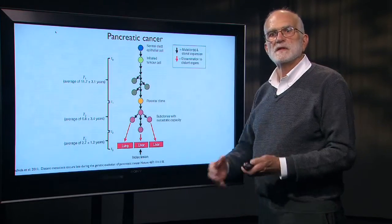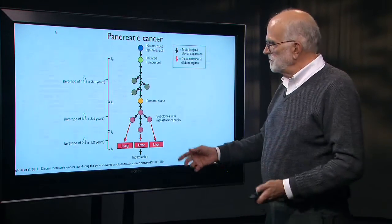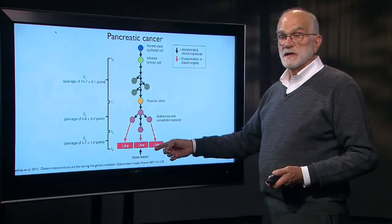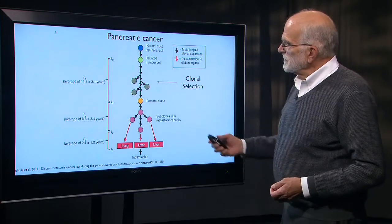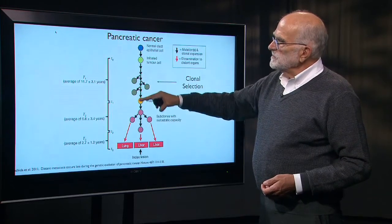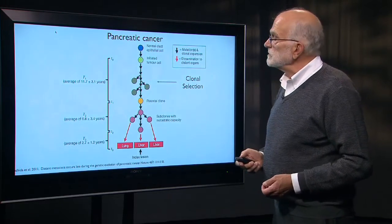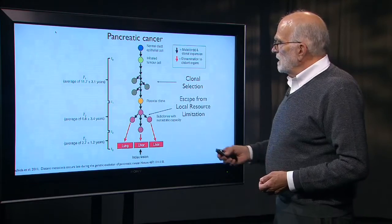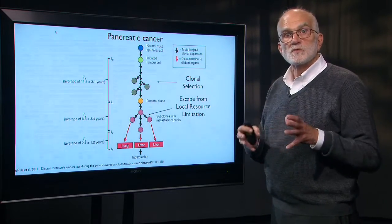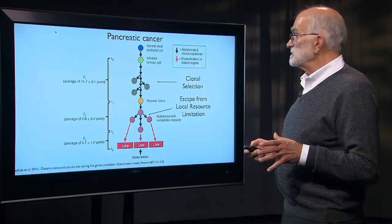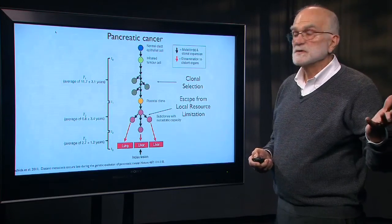So what's going on here? Well, there's a period of about 12 years here of clonal selection that's going on. Then with metastasis there is an escape from the local resource limitation of the pancreas and cells can move out and colonize other organs.